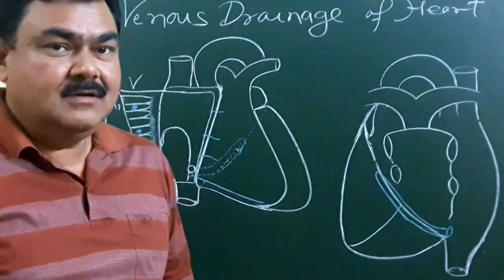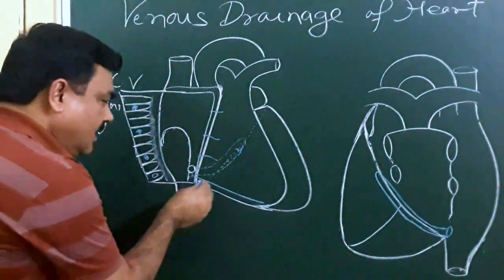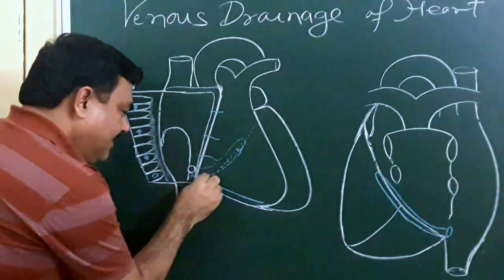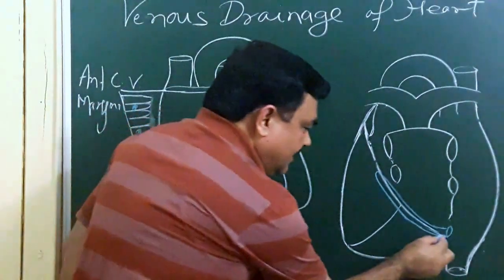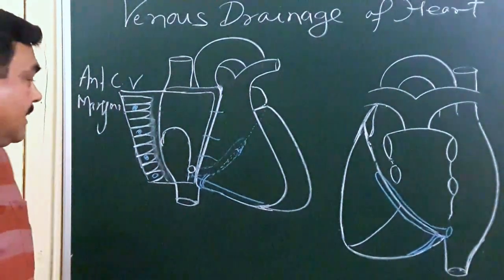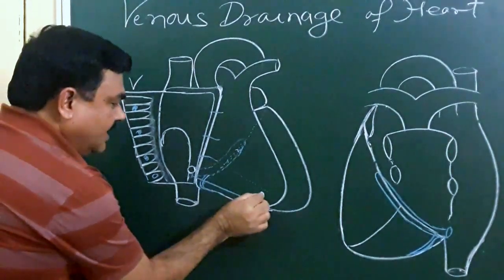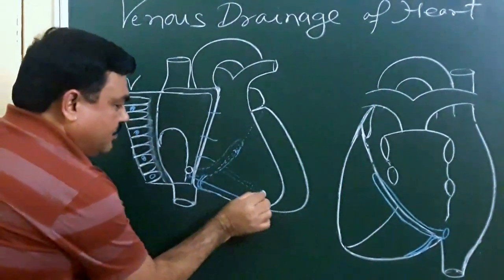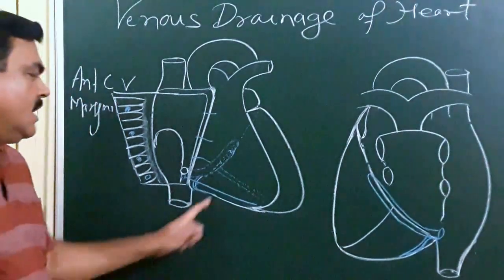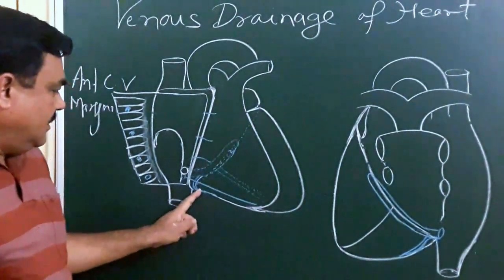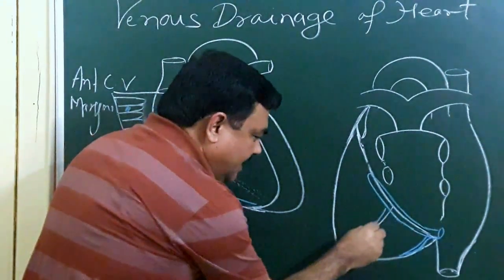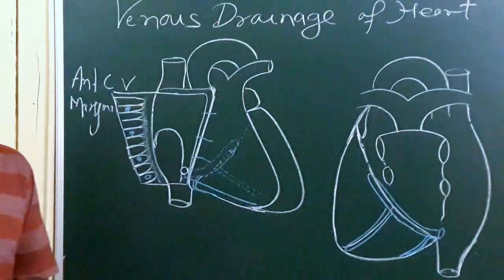One tributary lies here — this is the small cardiac vein. Here lies the small cardiac vein. There is also the middle cardiac vein, which lies in the posterior interventricular groove. In this diagram you can see the middle cardiac vein in the posterior interventricular groove.